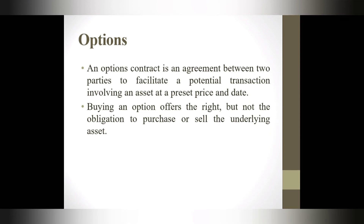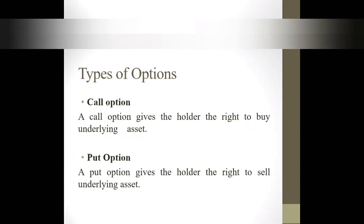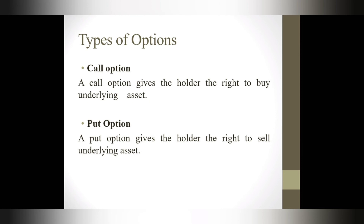The fourth and last important derivative is an option, similar to futures in that it is an agreement between two parties where one party has the opportunity to buy or sell a security. The major difference is that option contracts give the holder the option — but not the obligation — to buy or sell the asset at a certain price and date. There are two types of options: a call option gives the buyer the right but not the obligation to buy the underlying asset, while a put option gives the buyer the right to sell it. All option contracts are settled in the form of cash.